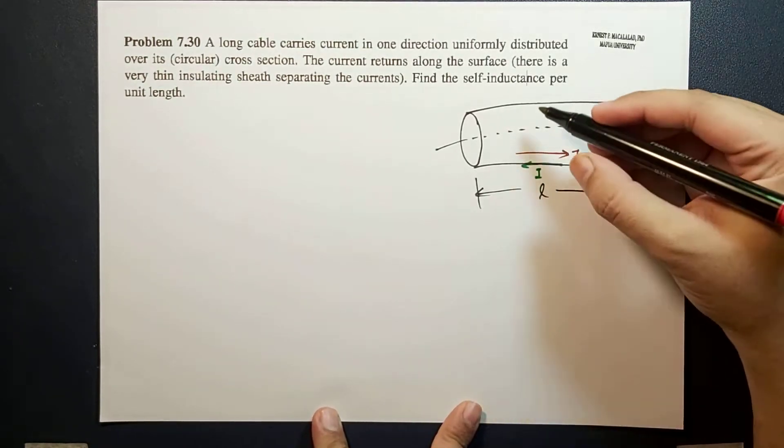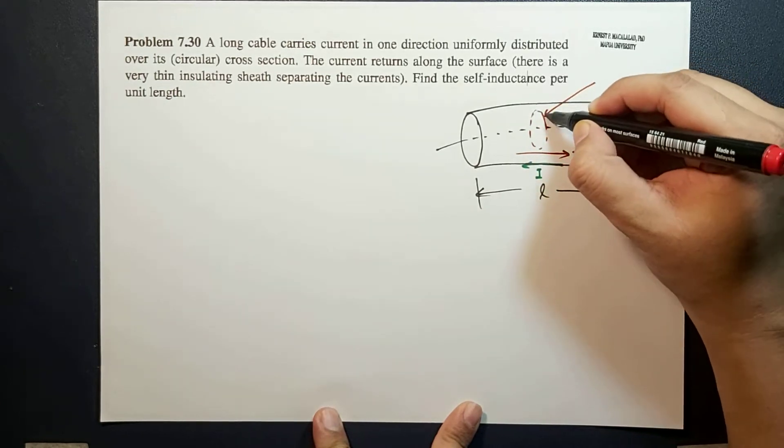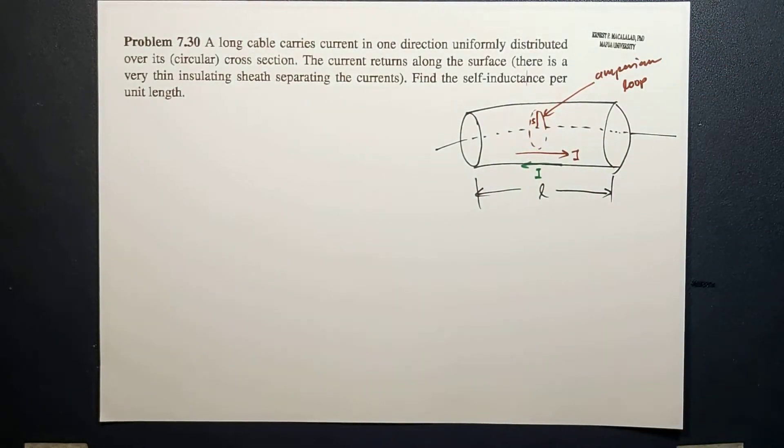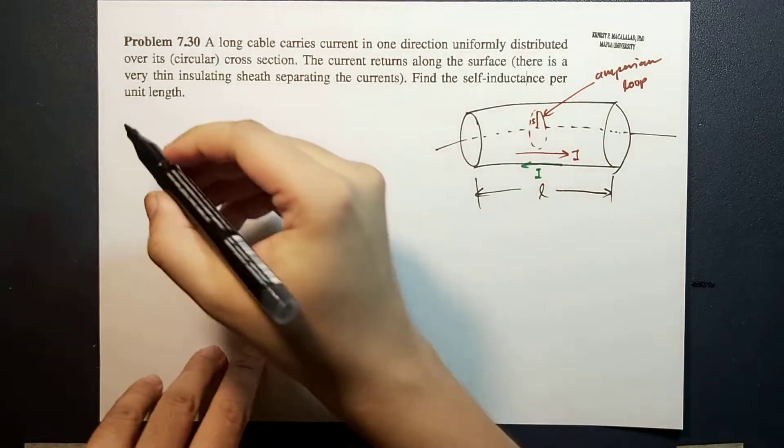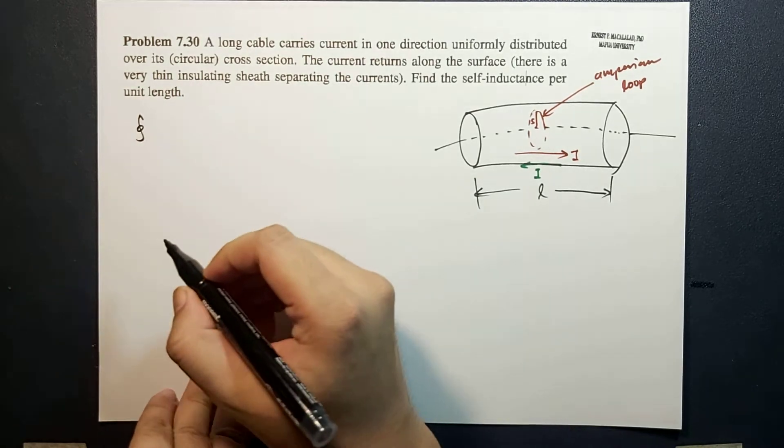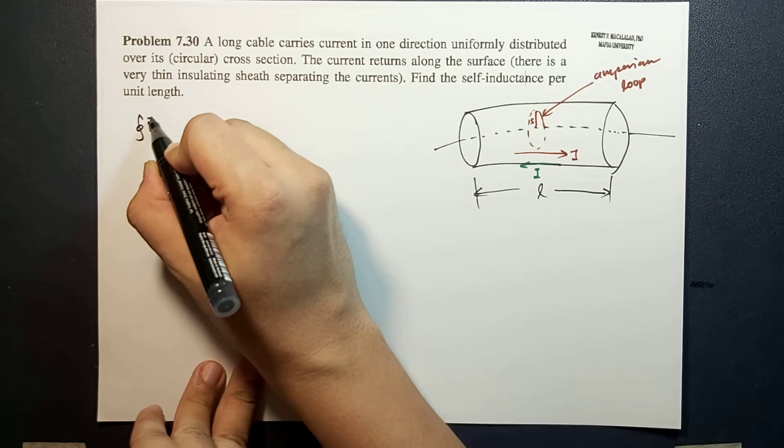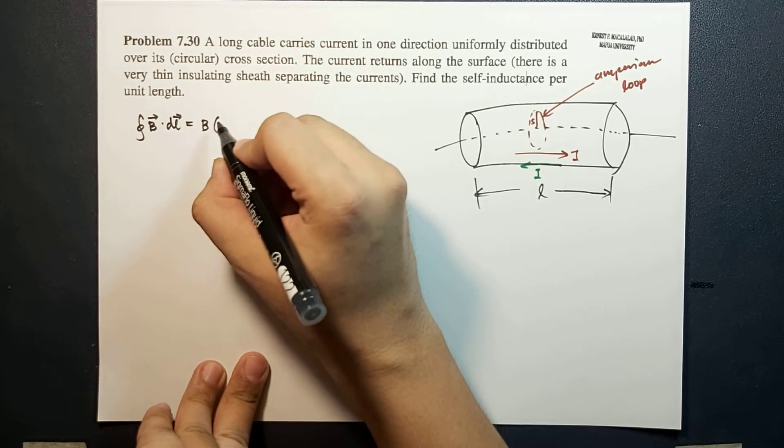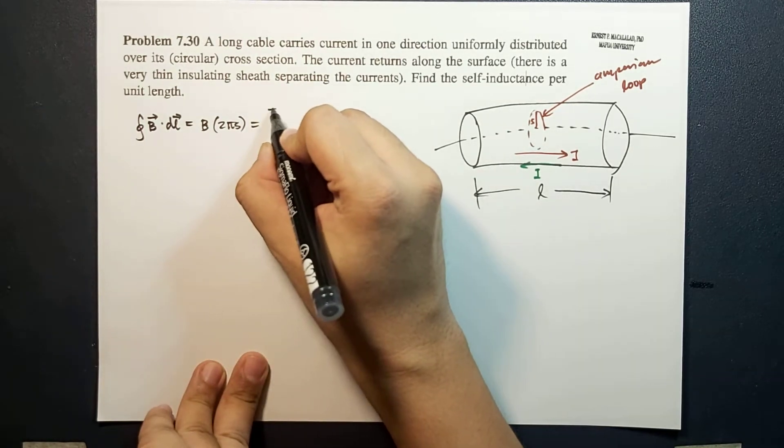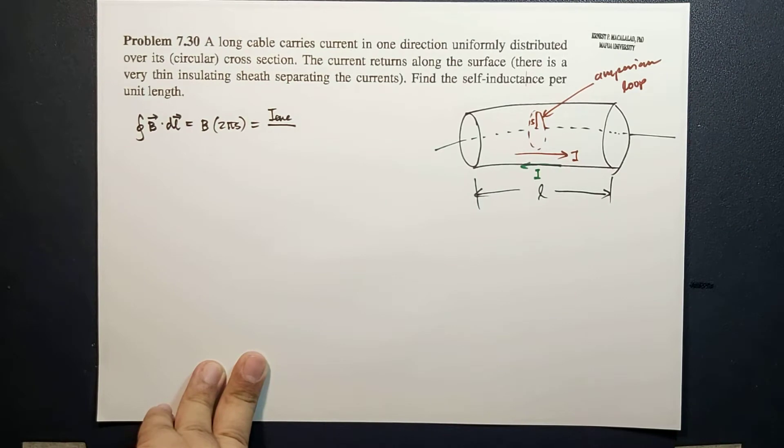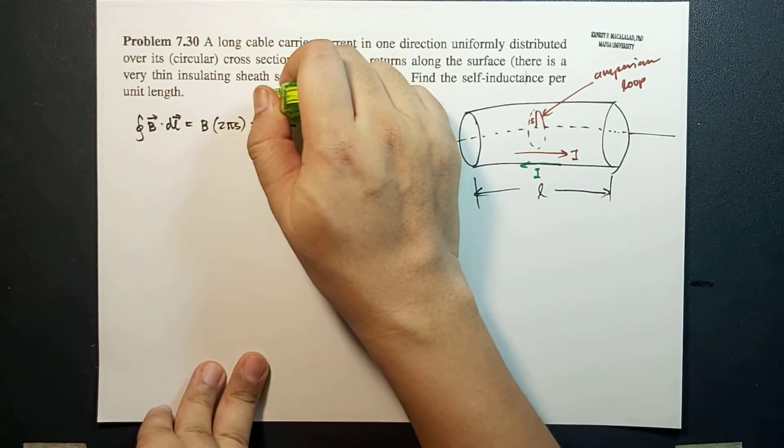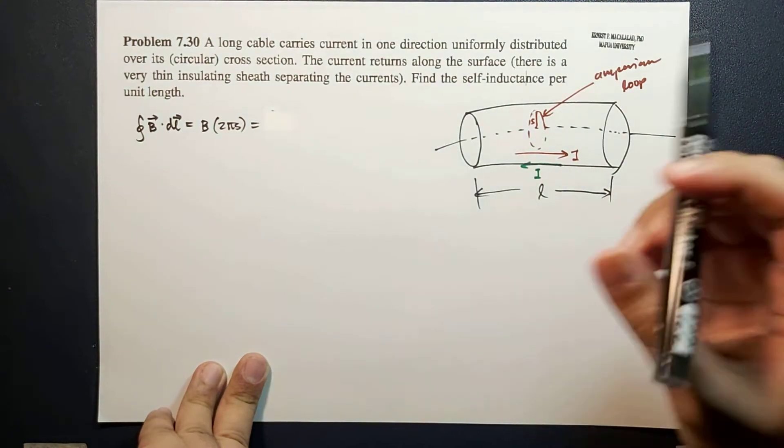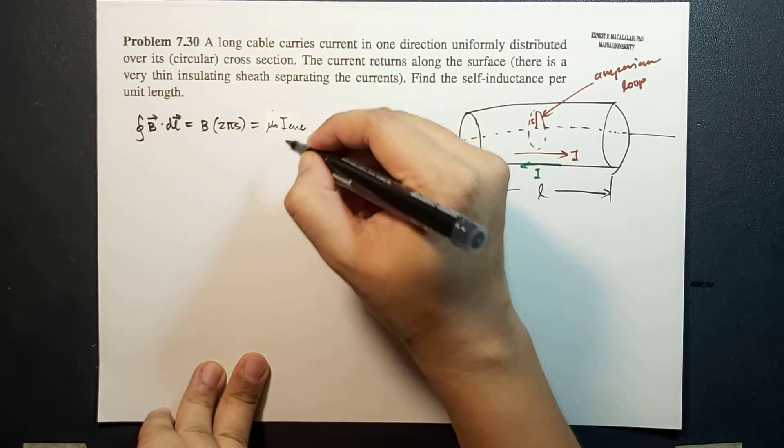Here we're going to use Ampere's law in integral form. That is expressed as the closed line integral of B dot dL would be equal to B times 2πS, and this is equal to μ₀ times I enclosed.